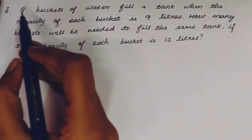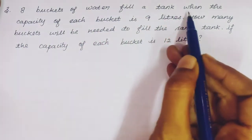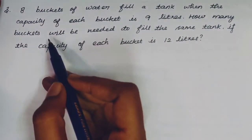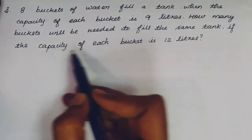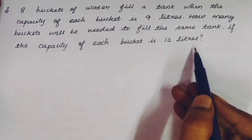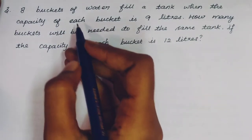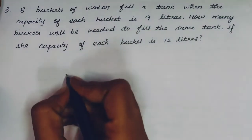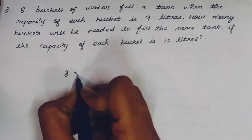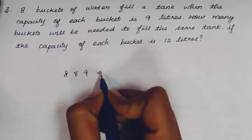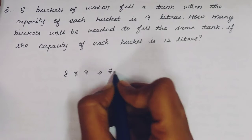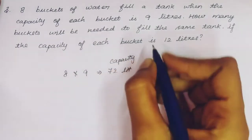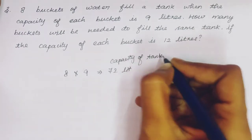Third question: 8 buckets of water fill a tank when the capacity of each bucket is 9 liters. How many buckets will be needed to fill the same tank if the capacity of each bucket is 12 liters? It is a very simple question. First: 8 buckets × 9 liters = 72 liters — that is the tank capacity.